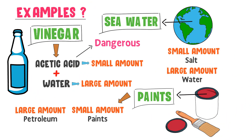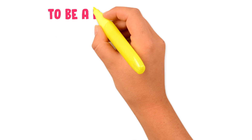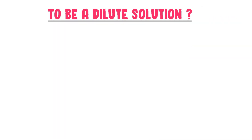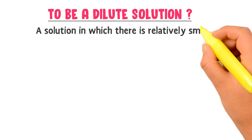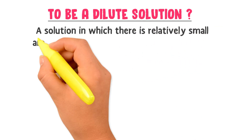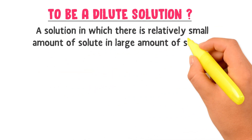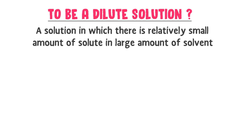Thus, remember that a Dilute Solution is one that has only a little solute dissolved in a certain amount of solvent. A solution in which there is a relatively small amount of solute and a large amount of solvent is considered a Dilute Solution.